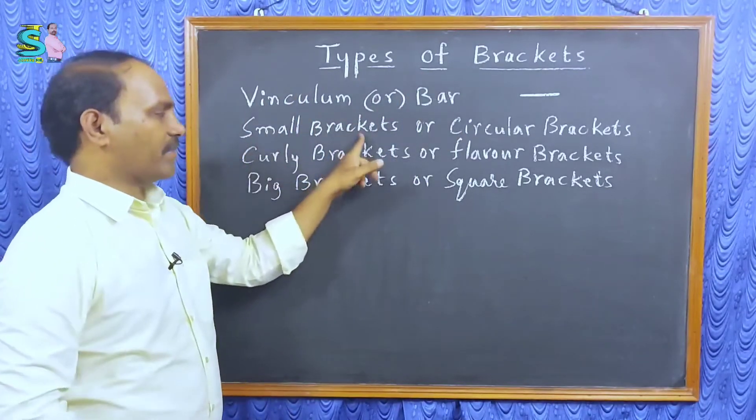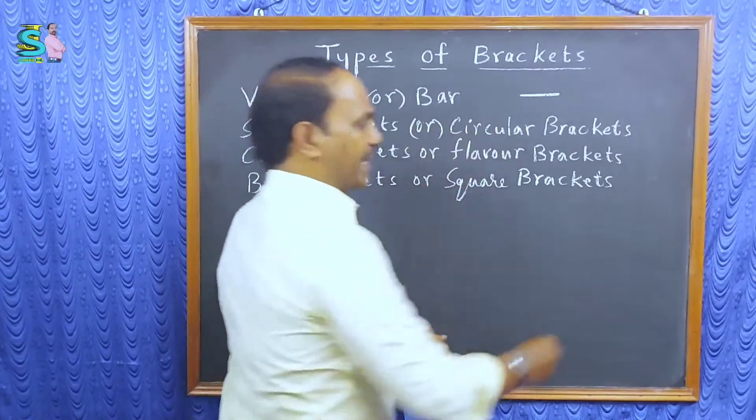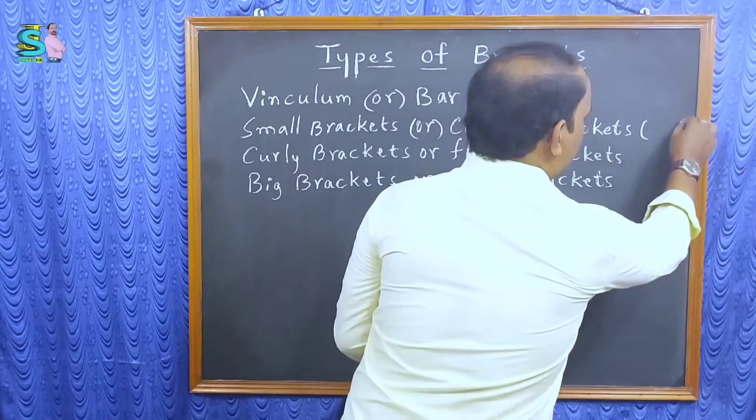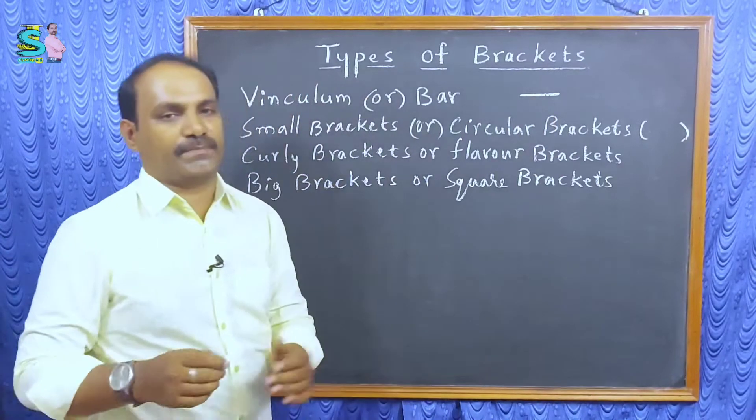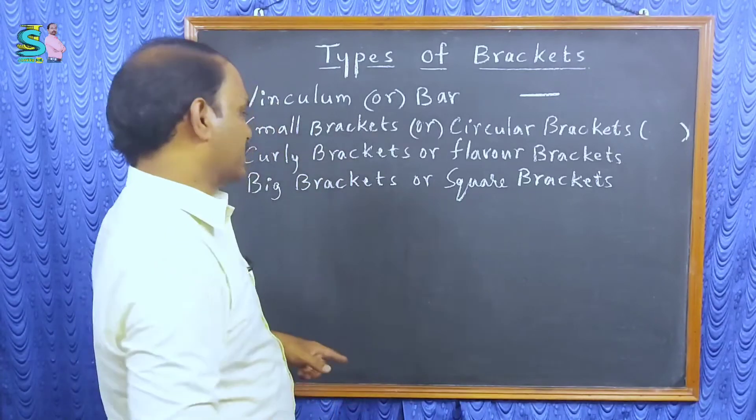Next one is small brackets or circular brackets. Already we used these brackets in so many question papers also. In objective type questions, we use this type of brackets.